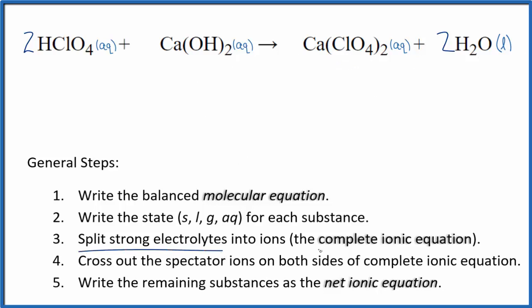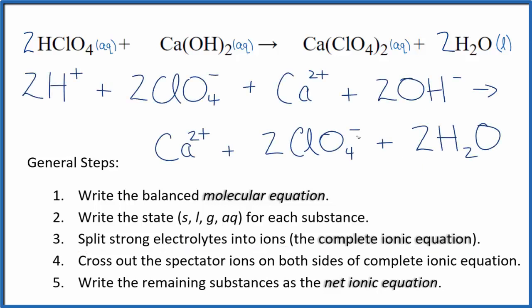Now we're going to split the strong electrolytes into their ions for the complete ionic equation. That looks like this. So we've split everything into its ions except the liquid. We don't split liquids apart in net ionic equations. And now we can cross out spectator ions. They're on both sides of the complete ionic equation.